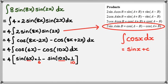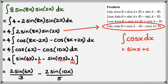Simplifying further: 4/6 is 2/3, so we get 2sin(6x)/3. And 4/10 is 2/5, so we get minus 2sin(10x)/5. Don't forget the arbitrary constant, plus C.